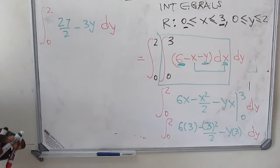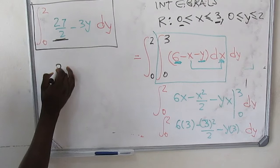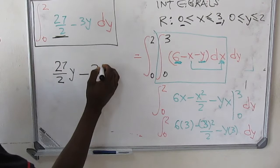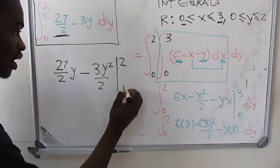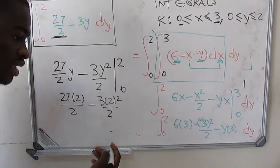Now we solve the outer part: integral from zero to two of (27 over 2 minus 3y) dy. Integrating: 27 over 2 times y minus 3 y squared over 2, evaluated between two and zero. Substituting y equals two gives: 27 over 2 times two minus 3 times two squared over two. Calculating this, our final answer is 21.